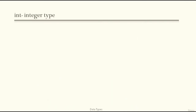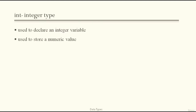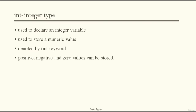Firstly, we discuss the integer data type. It is used to declare an integer variable. The int keyword allows us to use whole numbers only — no fractional values are allowed. It is used to store a numeric value; you cannot store a character value in an int. Positive, negative, and zero values can be stored.